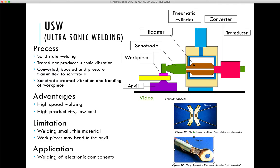The advantages of ultrasonic welding include very low heat input, minimal part distortion, no plastic deformation during the welding process, and very fast welding speed. The limitations of this process are that at least one of the parts being welded must be very thin. It is mostly limited to ductile materials such as copper, brass, and aluminum, and it is limited to lap joints only.